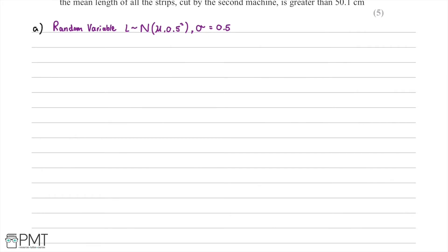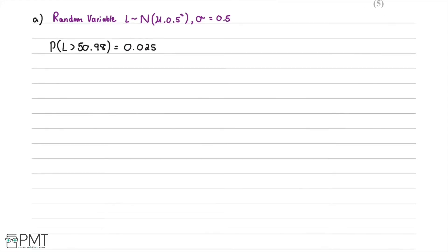Summarising the information: we have a random variable L with standard deviation 0.5, so the variance is 0.5 squared. We also know that the probability of L being greater than 50.98 centimetres equals 2.5%, which we write as 0.025 in decimal form. Our first step is to find the mean mu, and our second step is to find the probability that L is between 49 and 50.75.